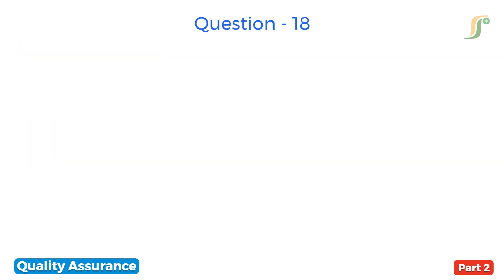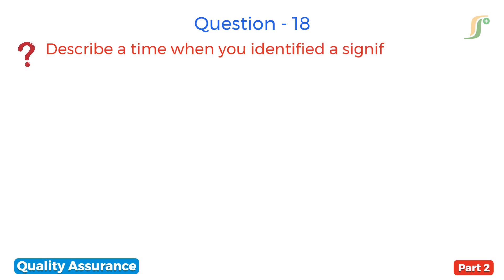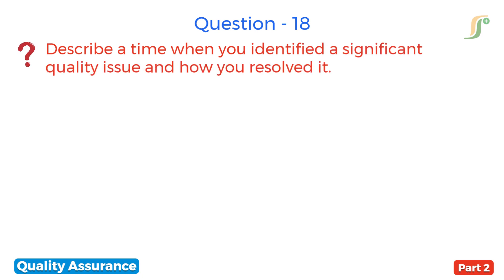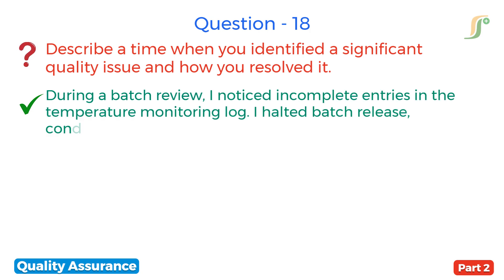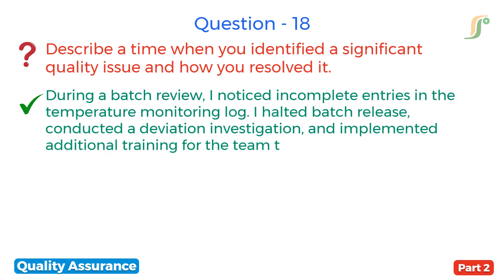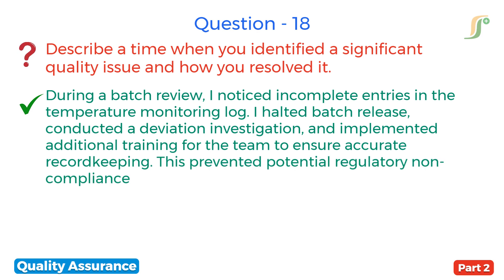The eighteenth question is: describe a time when you identified a significant quality issue and how you resolved it. During a batch review, I noticed incomplete entries in the temperature monitoring log. I halted batch release, conducted a deviation investigation and implemented additional training for the team to ensure accurate record keeping. This prevented potential regulatory non-compliance.